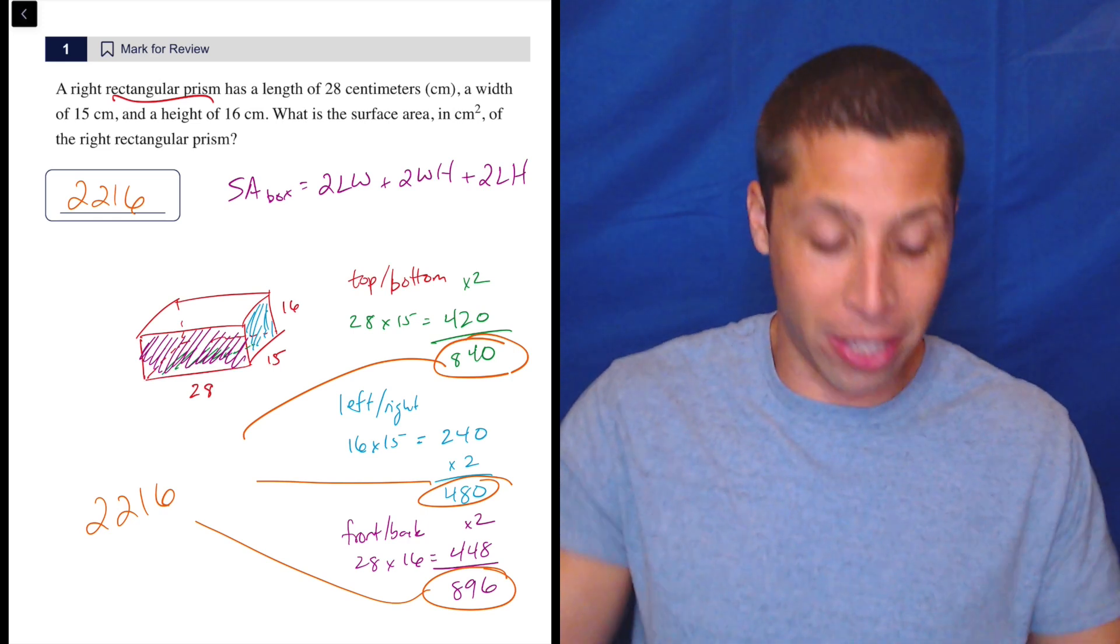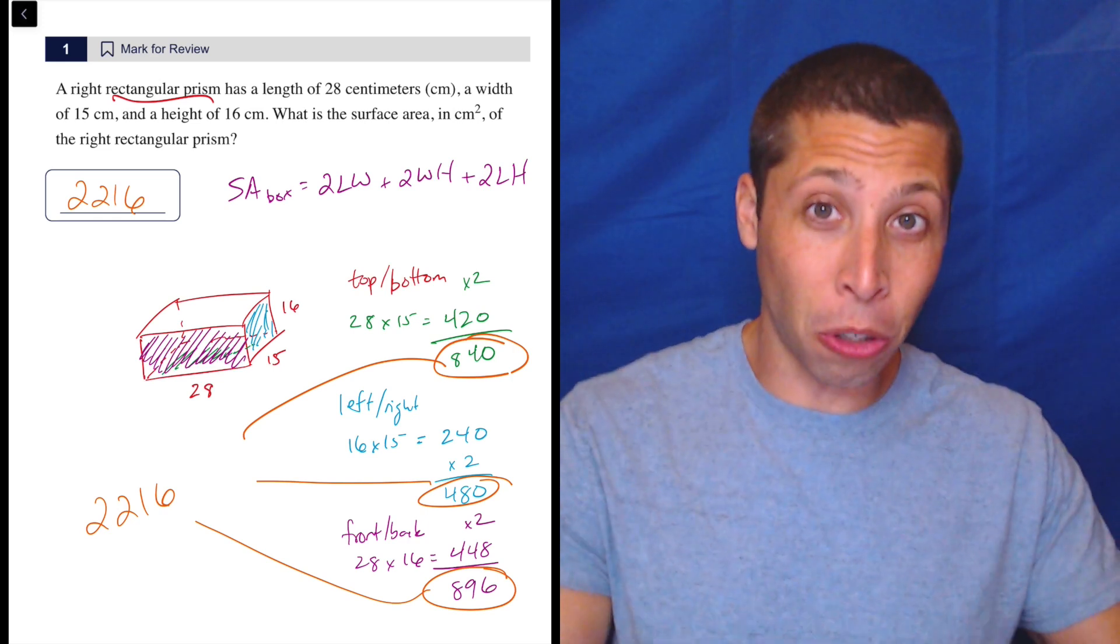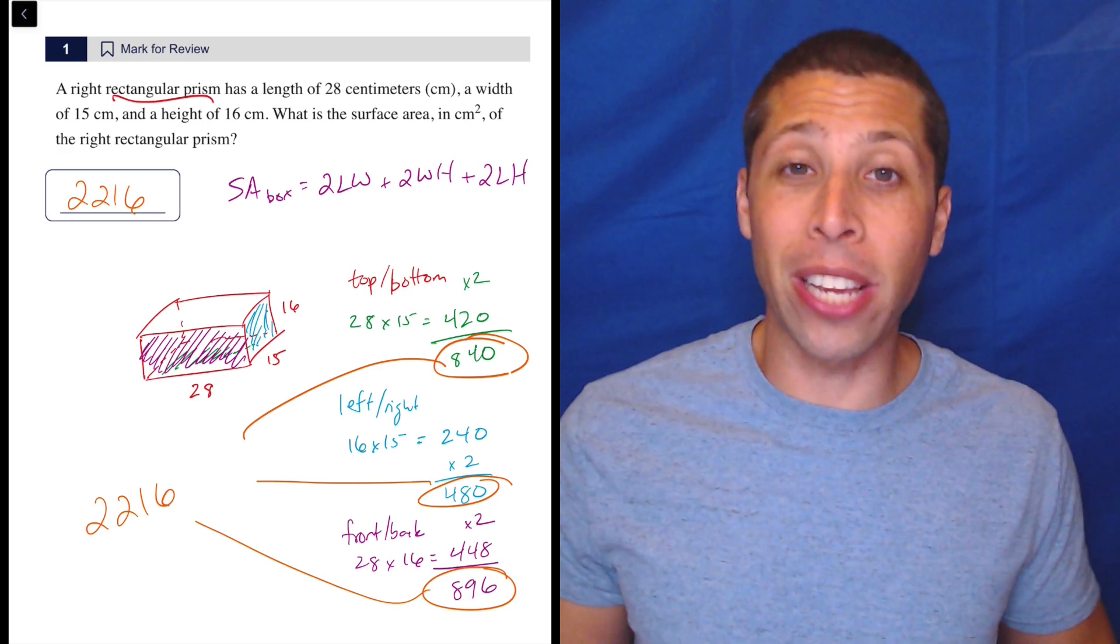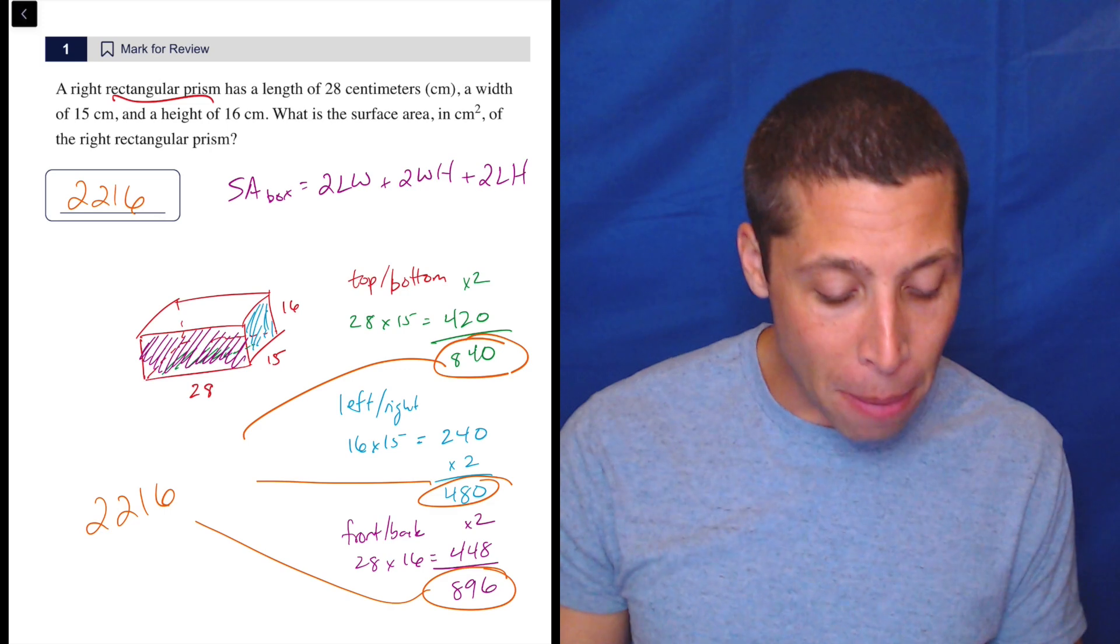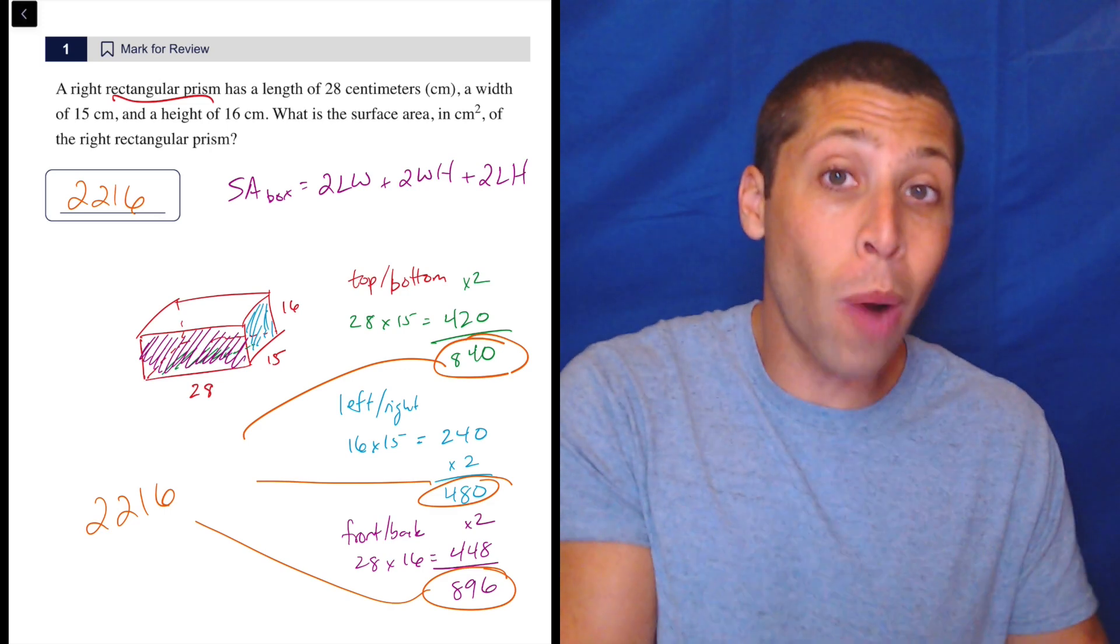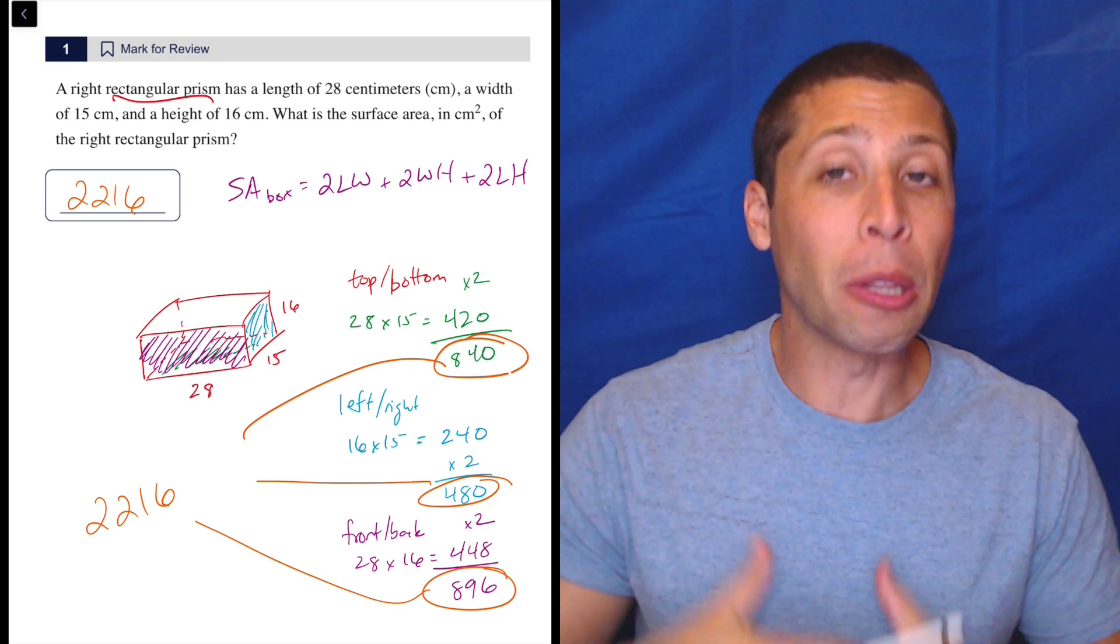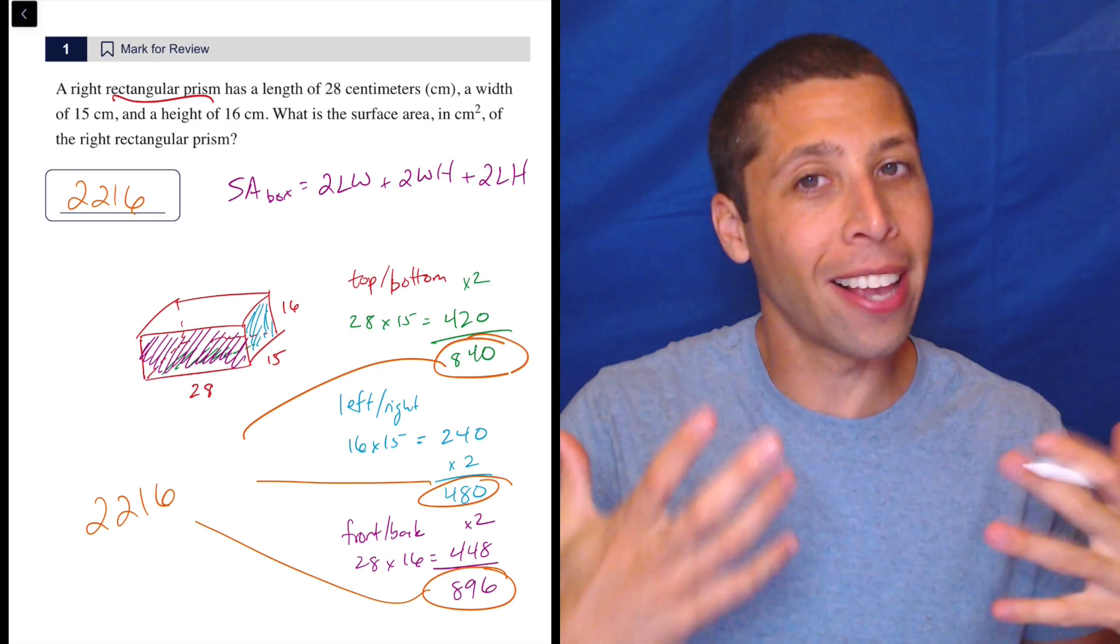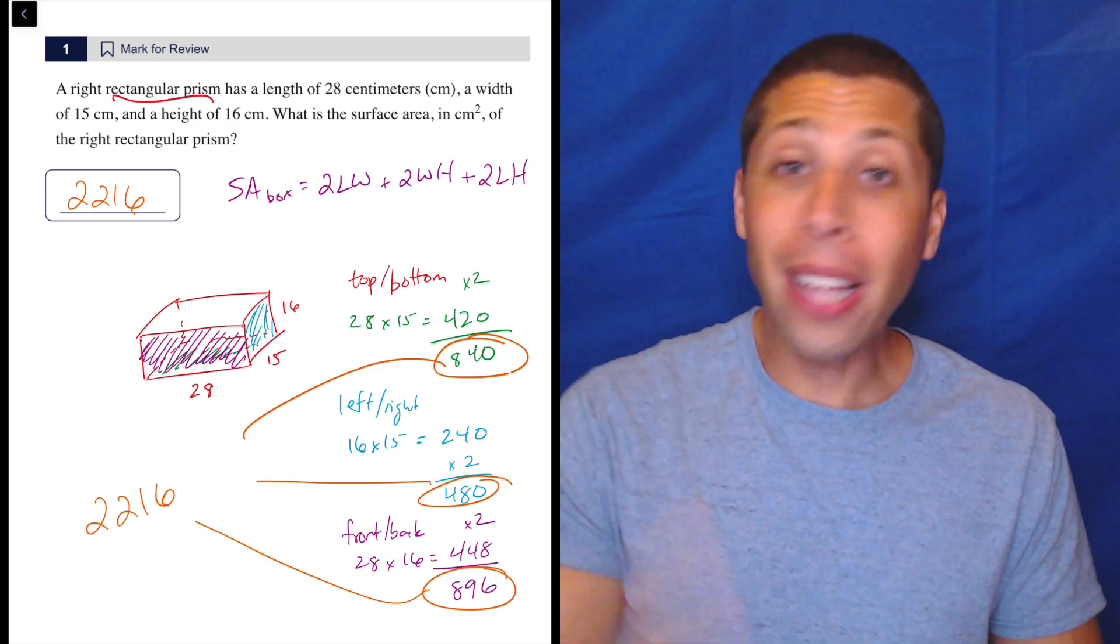Now, the problem with this is this is one of the simplest surface area formulas you will see. And yet, it's still kind of confusing. And I worry that you'll think you've remembered it, but you'll mess something up. Maybe you'll only remember two of the three parts. Maybe you'll forget the times two. Maybe you'll do length times width twice instead of length times width and length times height. I don't know. But the more complicated a formula is, the bigger of a chance that you mess it up. So I worry that you will think you've memorized it, but then you won't.